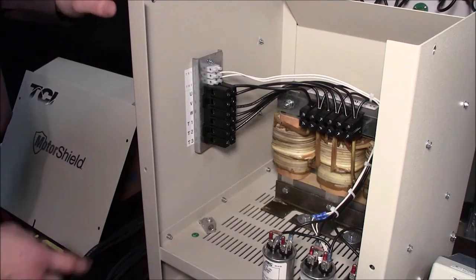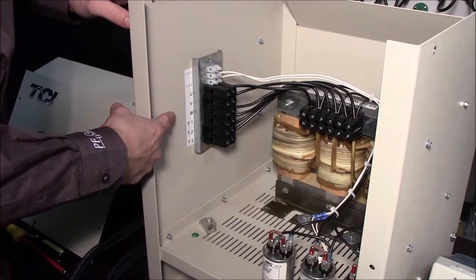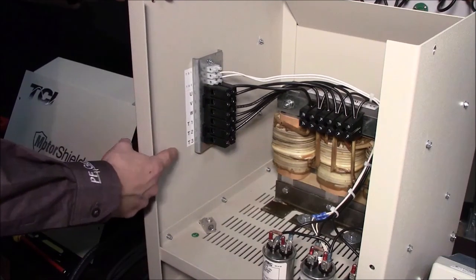The inputs of the motor shield are labeled U, V, and W and the outputs labeled T1, T2, and T3.